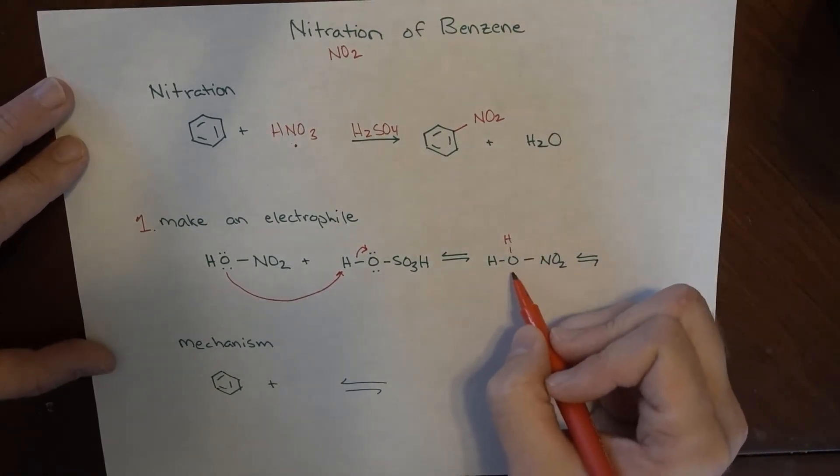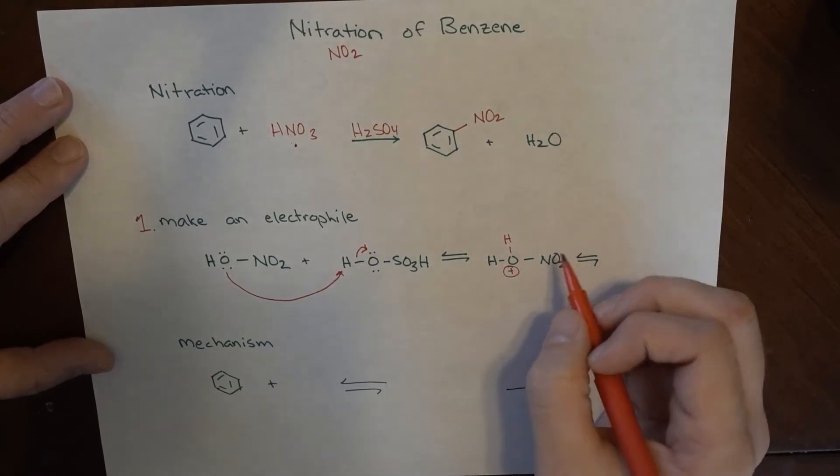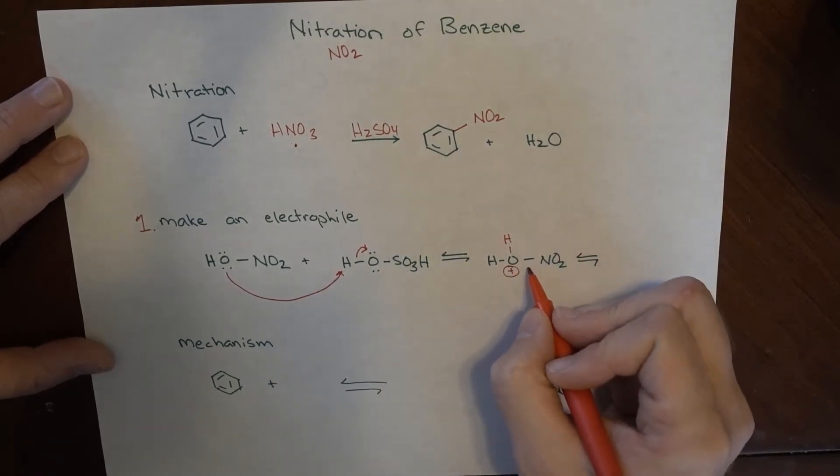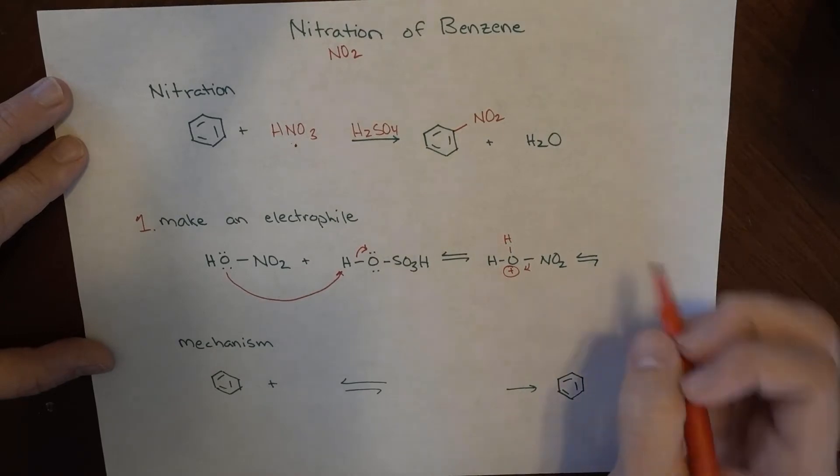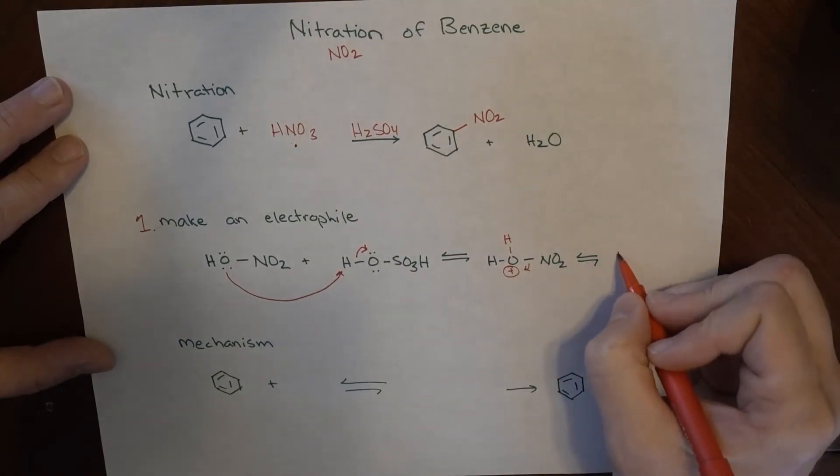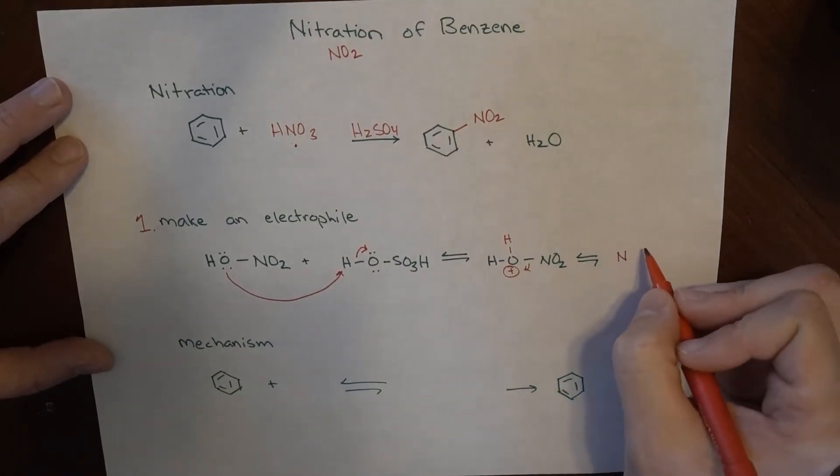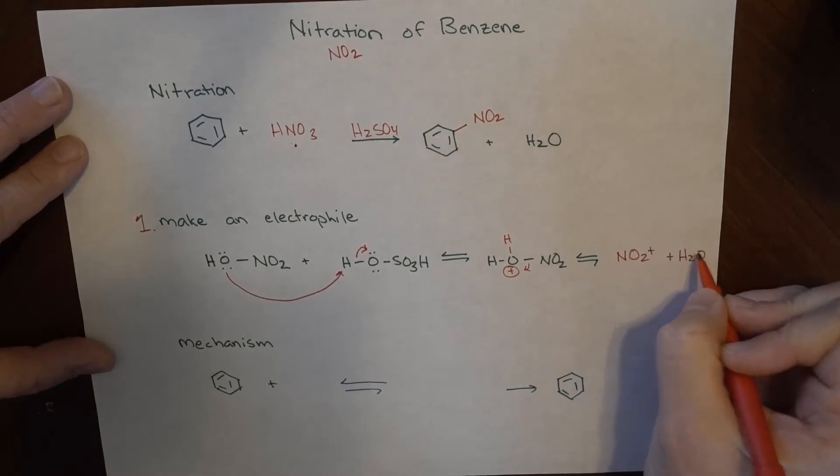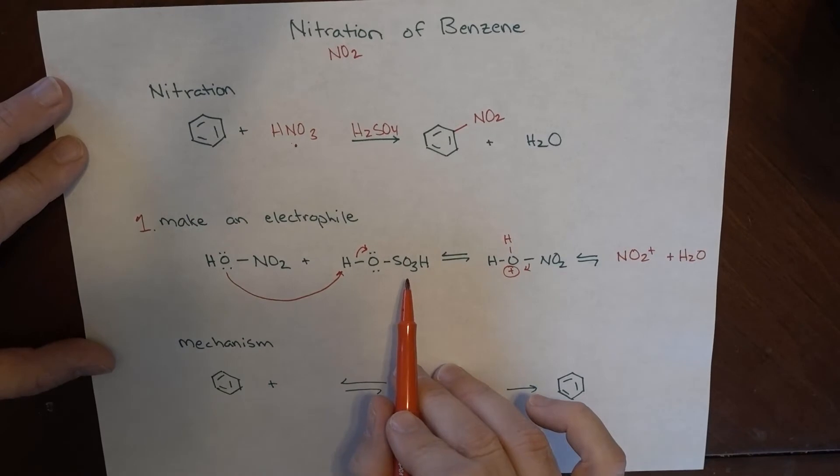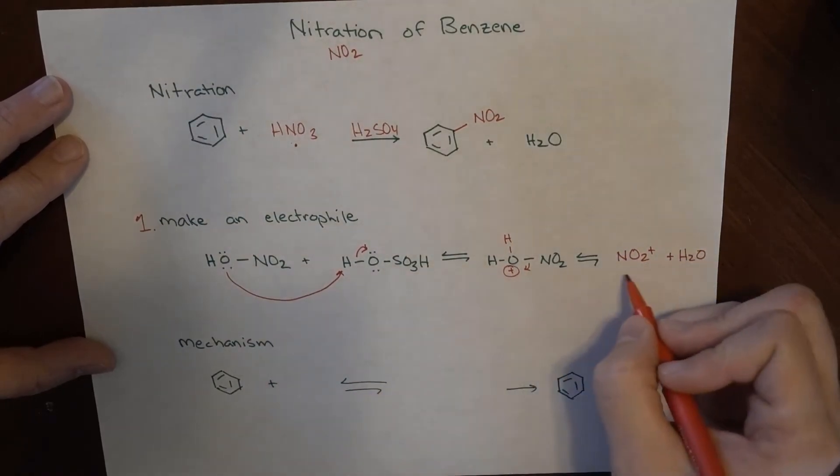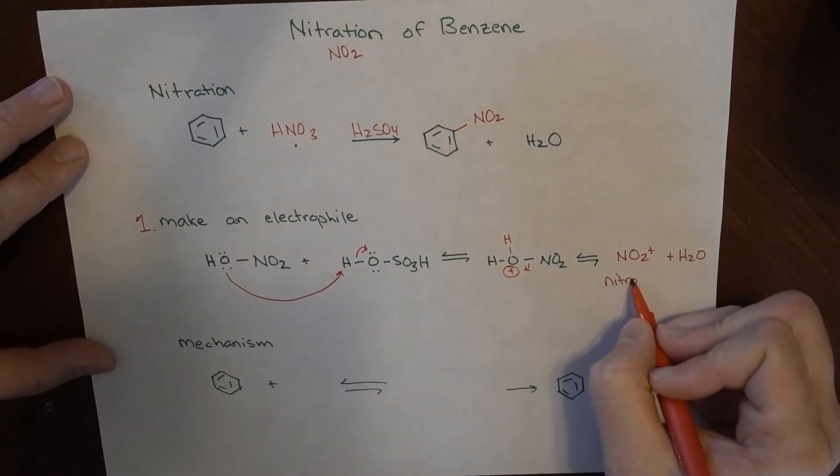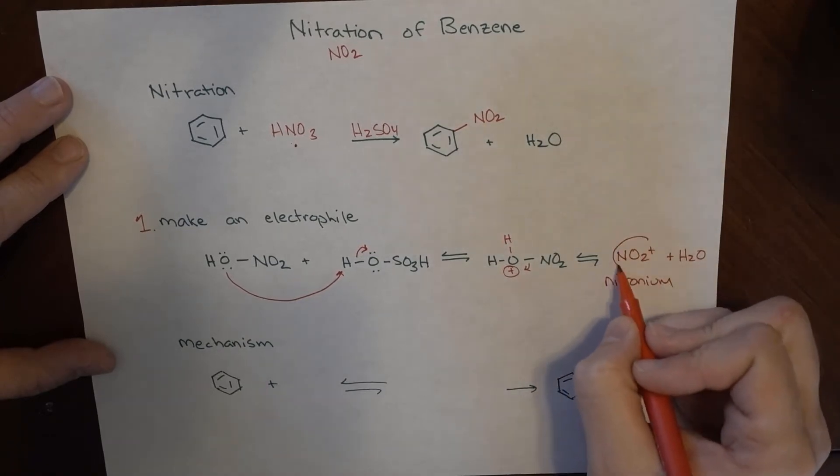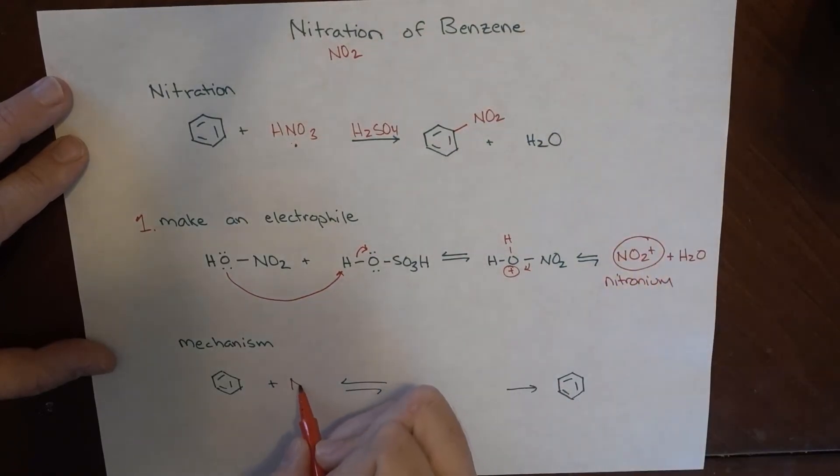Electrons kick over to this, and what we have here is a positive NO2+ molecule and water. This stuff we essentially lose track of, and this is our nitronium ion. That is the species that will react with our benzene ring as an electrophile.